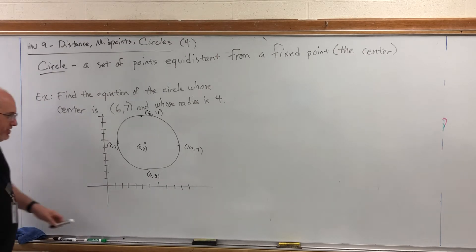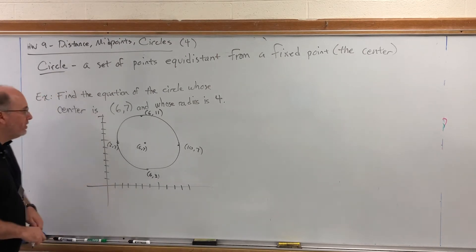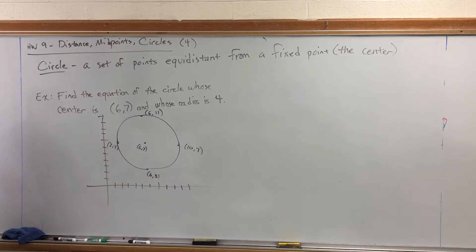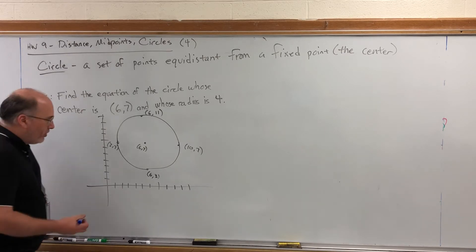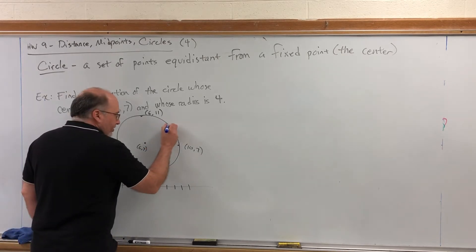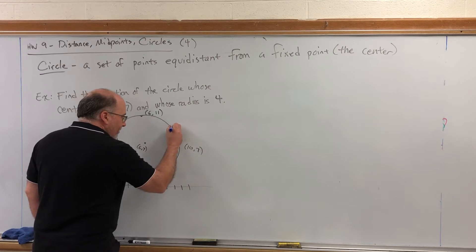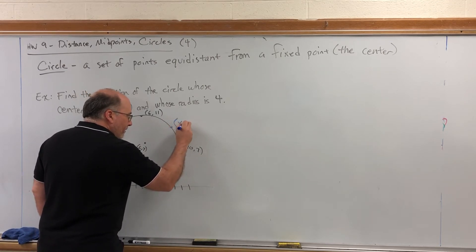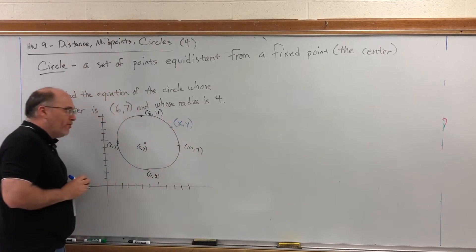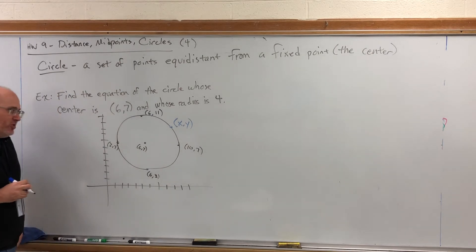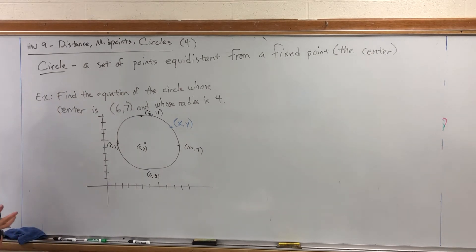But that didn't answer the question. That just helped draw the picture. How do you find the equation of a circle? Well, to find the equation of anything, you have to ask yourself, what do all the points on that graph have in common? So, we're going to pick a random point over here and just call it x comma y. That's a good generic name for a point. And ask ourselves,